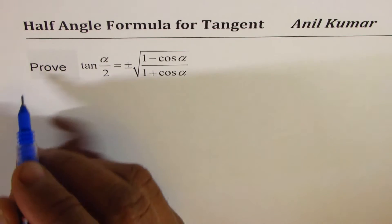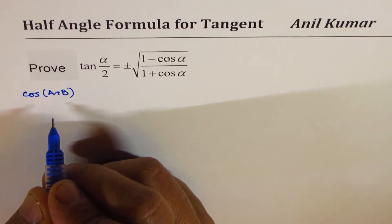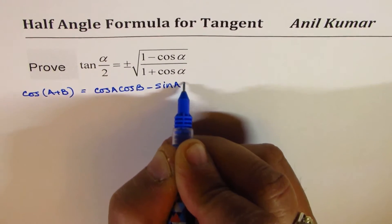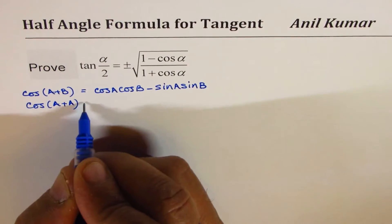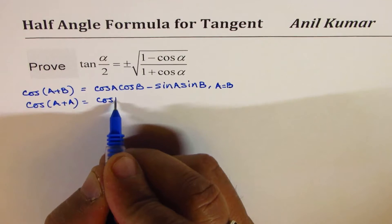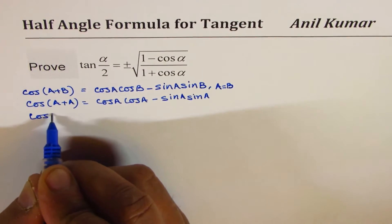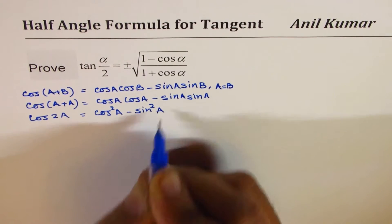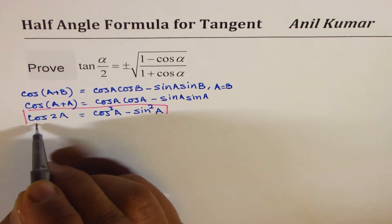We will start with the compound angle formula for cosine. Cos (a + b) can be written as cos a cos b minus sin a sin b. If I write a equals b, then cos (a + a) equals cos a cos a minus sin a sin a. That becomes cos 2a equals cos squared a minus sin squared a. So this is the standard formula for cos 2a.